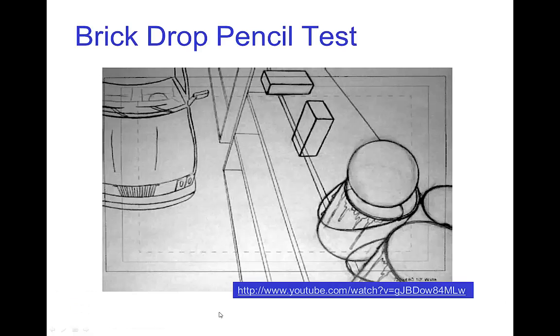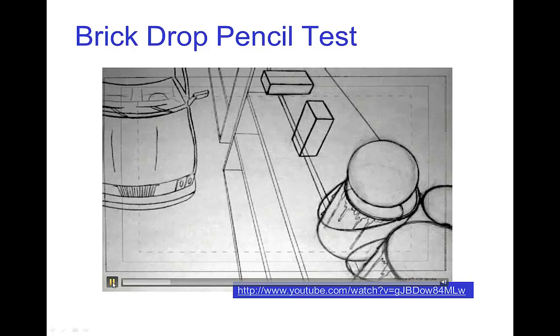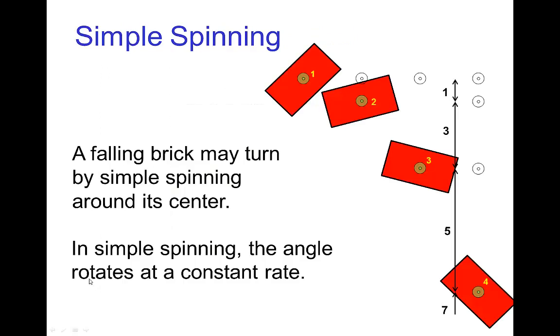So let's start by looking at a brick drop pencil test. In this basic drop, as the brick is falling, it's turning and that turning motion, in this case, is a simple spinning, or at least until it hits the ground.